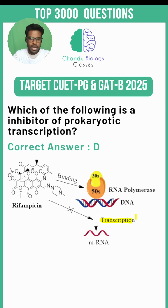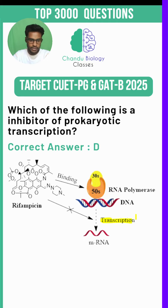By targeting prokaryotic RNA polymerase, Rifampicin does not affect eukaryotic transcription, which is the key reason for its selective toxicity.